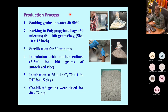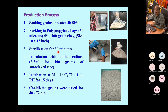This production process is the one we use for training coconut farmers. First, soak the rice for 4–5 hours, then drain it and fill 100 grams per bag in a 10×12 inch autoclavable paper bag. Sterilize using a rice cooker, which all farmers have at home. Then inoculate with the mother culture we provide. Incubate at room temperature; within 15 days, the entire rice grows into spore production. Use the sieving method to collect spores, add water and a sticker, and spray into the field.